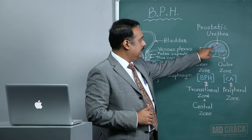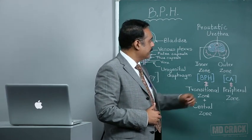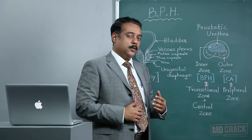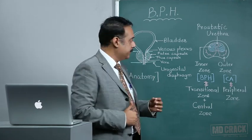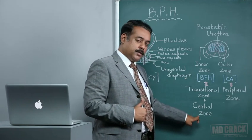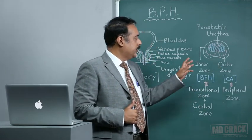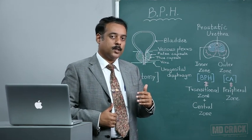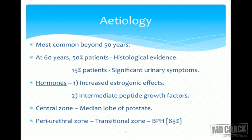The central zone goes along with the transitional zone, and the outer zone — also called the peripheral zone — is prone for development of malignancy or carcinoma of the prostate. The periurethral zone or transitional zone mainly houses BPH, and this is the case 85% of the time.